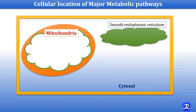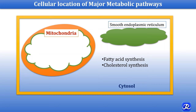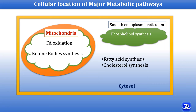What is the cellular location of major metabolic pathways? Fatty acid synthesis occurs in the cytosol. Cholesterol synthesis occurs in the cytosol as well as in the endoplasmic reticulum — some enzymes are located in cytosol and some in the endoplasmic reticulum. Fatty acid oxidation occurs in mitochondria, and ketone body synthesis also occurs in mitochondria. In the smooth endoplasmic reticulum, compound lipid synthesis occurs — for example, phospholipid synthesis — and triacylglycerol synthesis (lipogenesis) also occurs in the smooth endoplasmic reticulum.